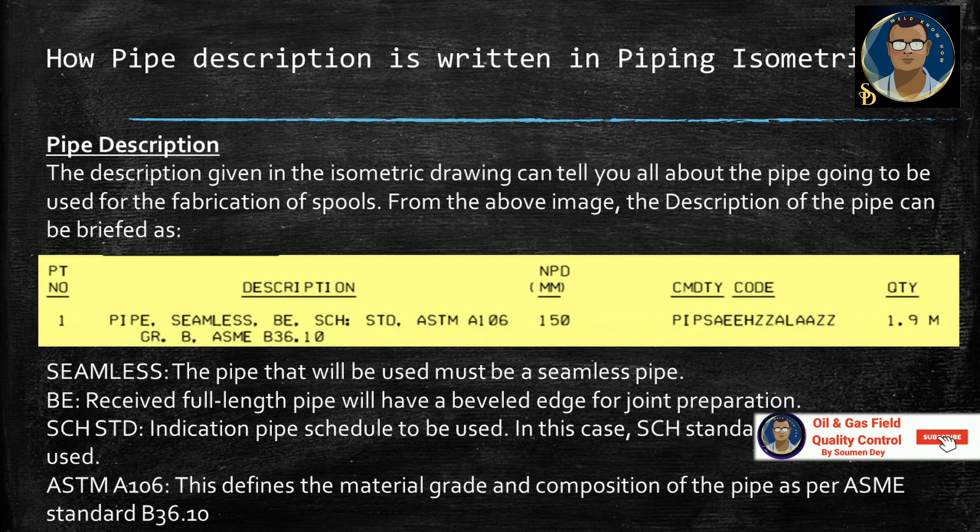From the above image, the description of the pipe can be briefed as: Pipe, seamless, BE, schedule STD, ASTM A106 grade B, ASME B36.10, NPD 150mm, and quantity is 1.9 meter.